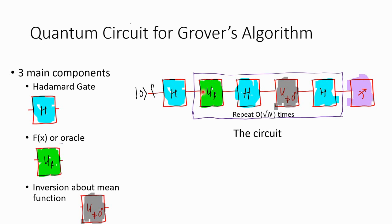This U_f is a black box for you and you need to find what is the secret within this U_f. Then again another Hadamard gate, and then there is a mean inversion function — we will see what that is, how that function looks, how to implement it, and then another Hadamard.